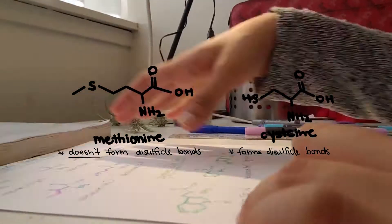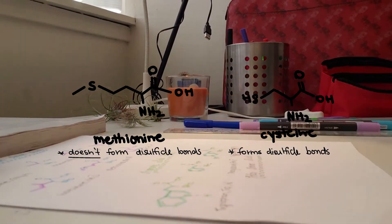Also note that methionine and cysteine are the only two amino acids with a sulfur side group.